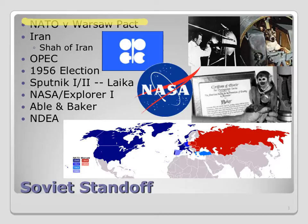We have talked about NATO before — the North Atlantic Treaty Organization. If you look at the map down here at the bottom, all these countries in any shade of blue, light blue, dark blue, whatever, those are all NATO countries. It goes all the way from the United States and Canada, all the way as far east as Turkey. Most of Western Europe falls under NATO as well.